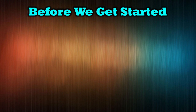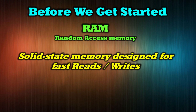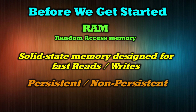The map data you cache to your device is stored in a type of memory called RAM — random access memory — which is solid state memory specifically designed for incredibly fast reads and writes. RAM comes in two flavors: persistent and non-persistent. The difference is that persistent memory will hang on to the data you park there even if you power off the device. Non-persistent means if you power down the device, or in some cases shut down the application, that memory is lost, cleaned out, and that map data is gone for good.